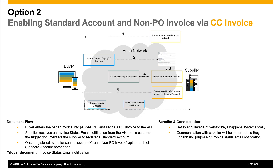Once registered, the supplier can access and create the non-PO invoice on their standard account homepage. In this scenario, the trigger document is the CC invoice invoice status email notification sent to the supplier as part of the CC invoice process, and within that notification there is a link they can use to register their standard account.